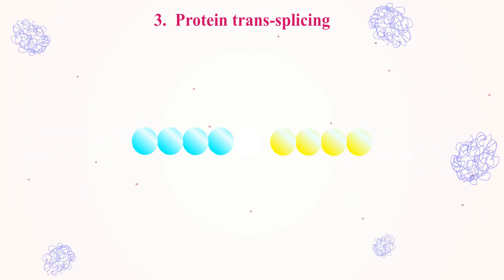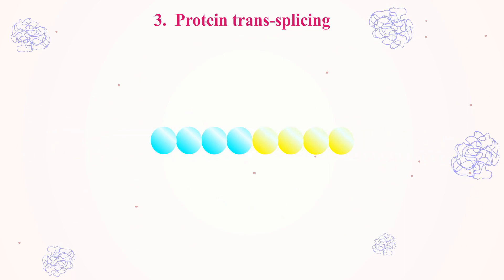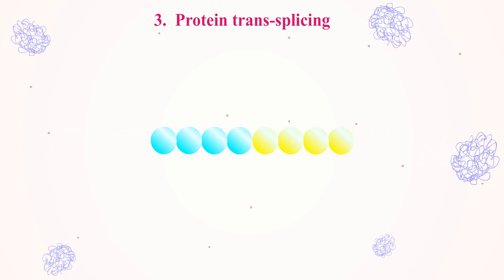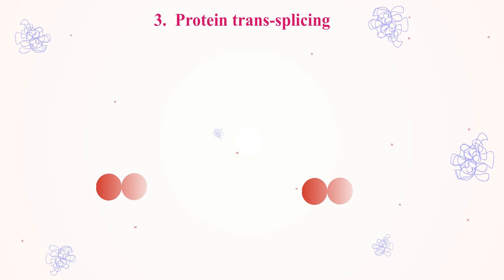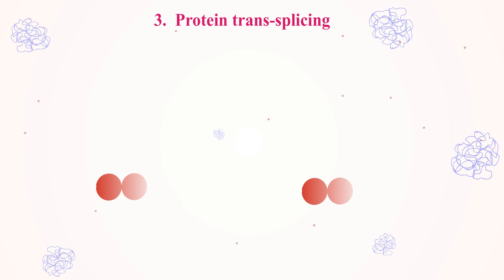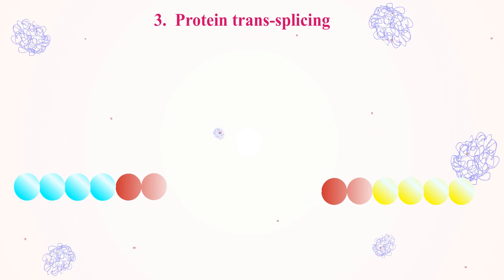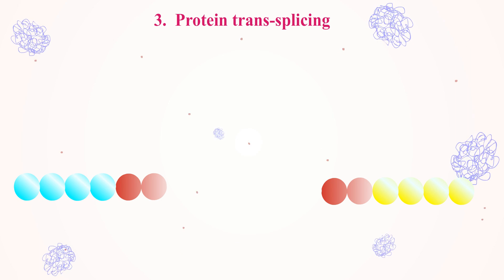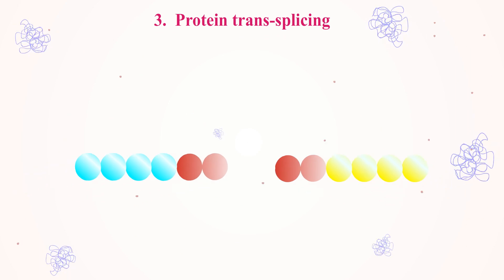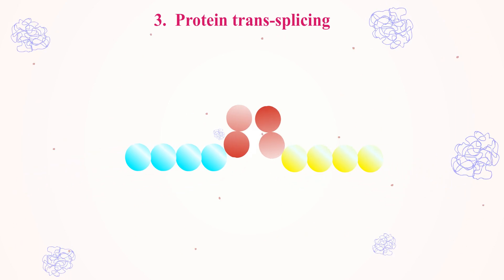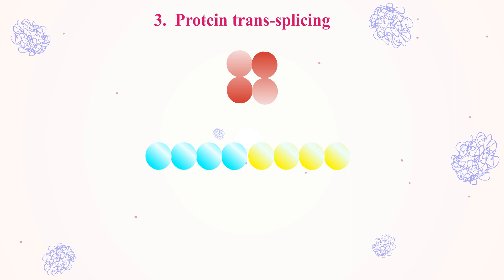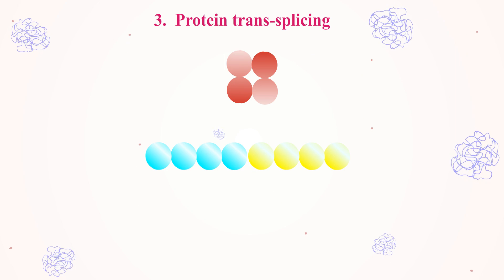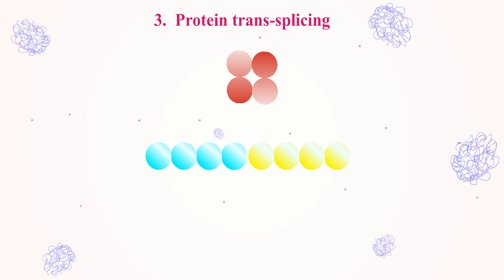The third application is protein trans-splicing, a method used to ligate any two unrelated peptides. In trans-splicing, the intein of the precursor protein is split into two segments. Each segment is fused to an appropriate extein and expressed in a different host. Upon recombination of the denatured intein fragments, the fragments reassociate and are able to initiate protein splicing without being covalently linked.